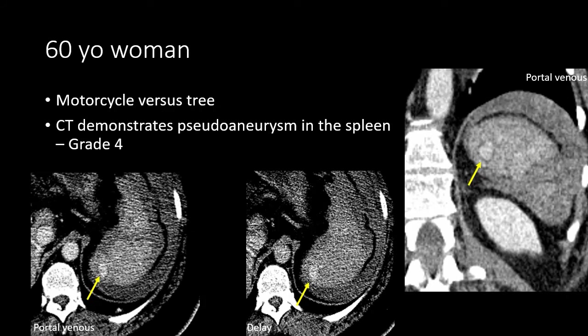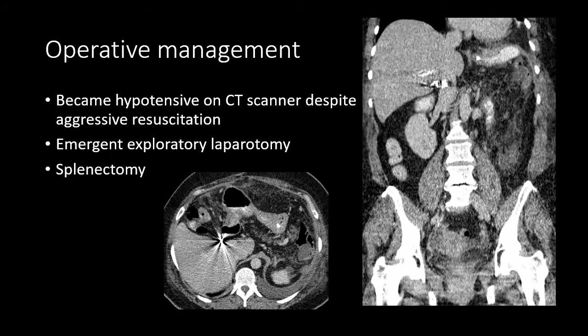We also do not see any pooling in the perisplenic space or peritoneal cavity. We can therefore classify this as a pseudoaneurysm of the spleen — it is contained within the splenic tissue with no intraperitoneal bleed, making it a grade 4 splenic injury. This grade 4 injury did require operative management because the patient was hemodynamically unstable. The inability to maintain blood pressure despite aggressive resuscitation resulted in emergent laparotomy and splenectomy. Ideally, if the patient had been stable, this pseudoaneurysm could have been treated with embolization.